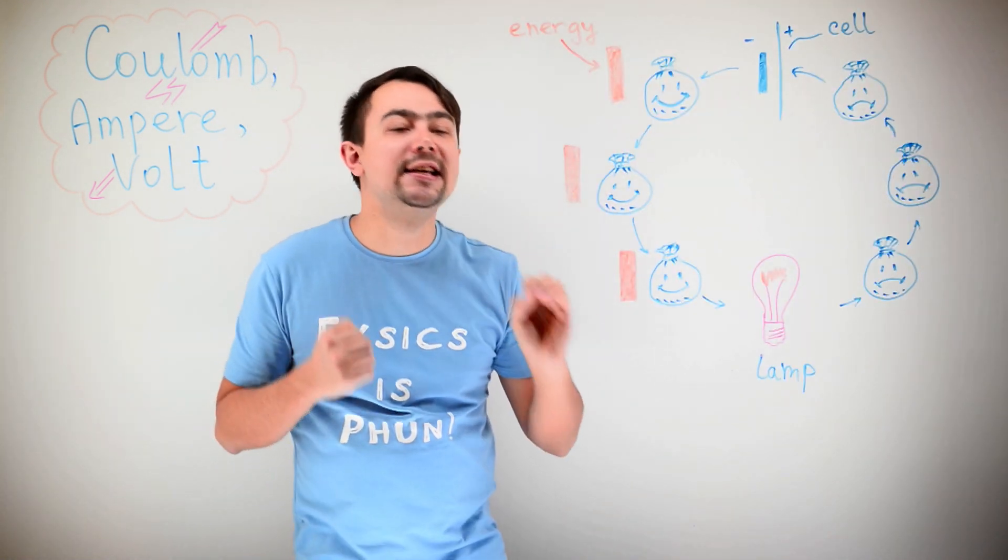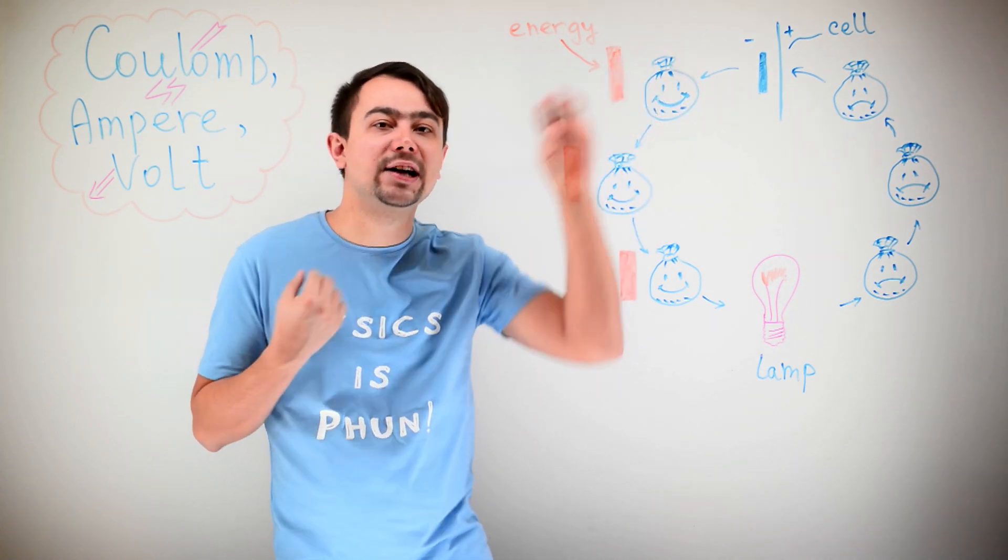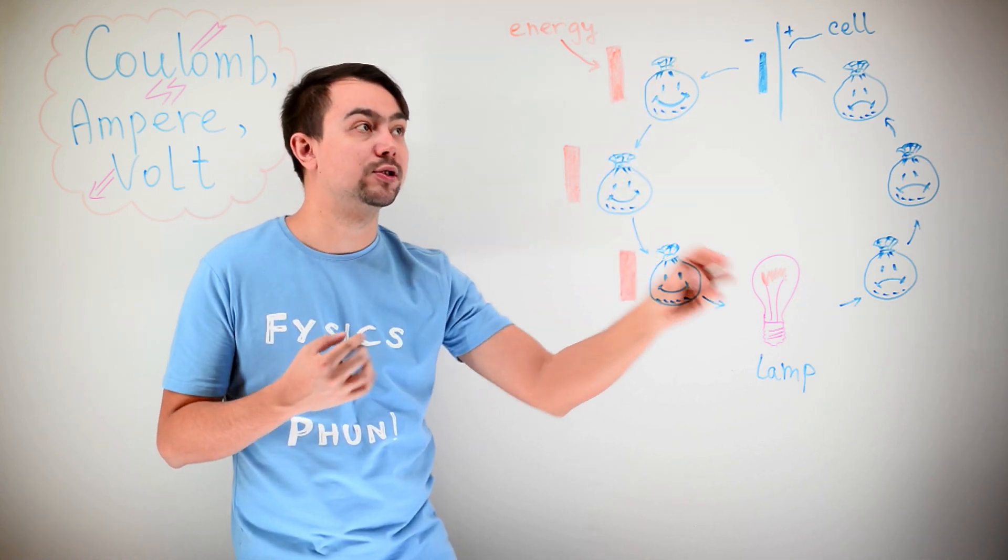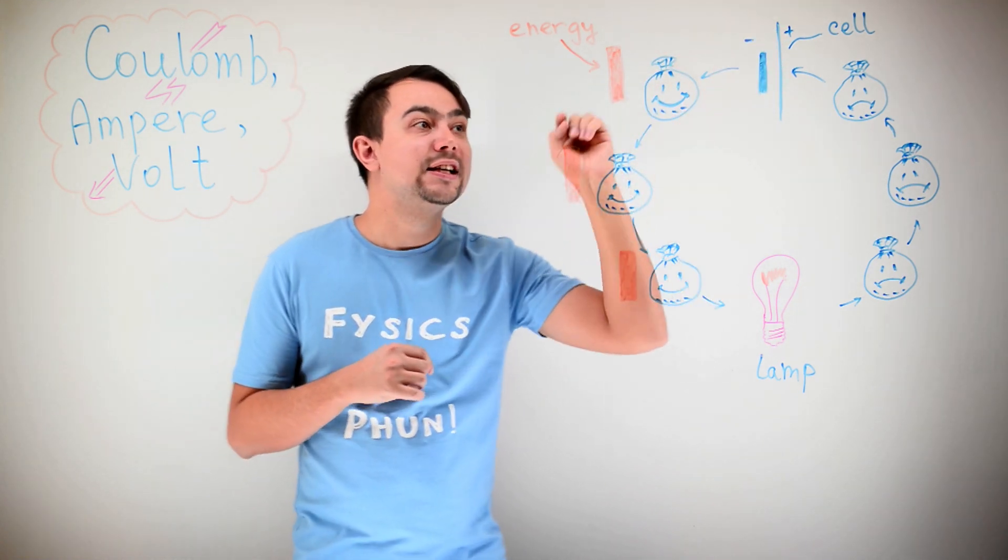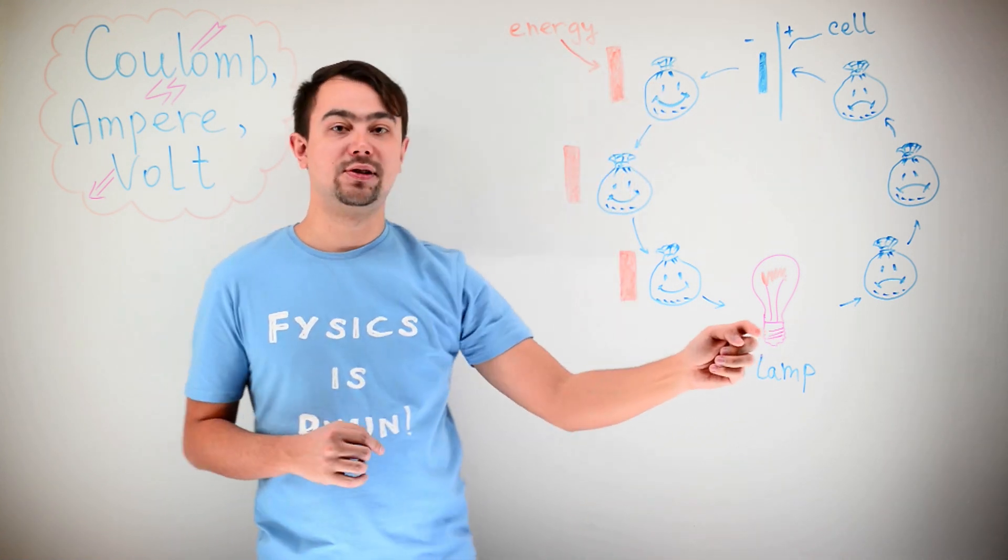In this simple circuit, the cell gives the electrons energy. Well, when I say electrons, I actually mean bags of electrons. That is a Coulomb. So, this is a Coulomb of electrons. So, this cell gives the electrons energy.